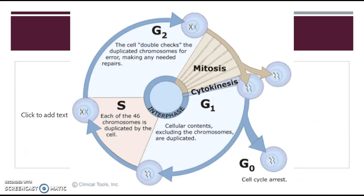Another thing to talk about is angiogenesis — this is when tumors send chemical signals that cause blood vessels to grow towards the tumor, because the tumor needs a large supply of blood to continue to grow. There's also density-dependent inhibition: normal cells grow to a certain density, usually just enough to cover one surface layer. But cancer cells do not demonstrate density-dependent inhibition, and they keep growing even though there are already too many of them.